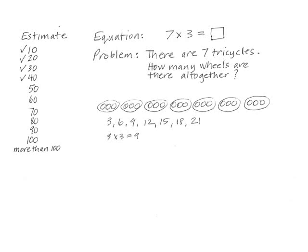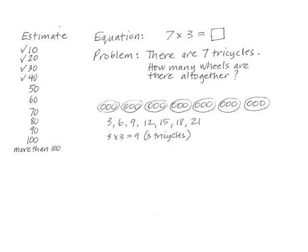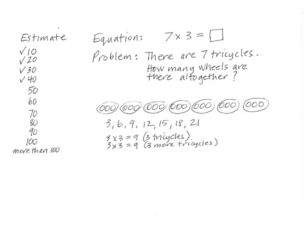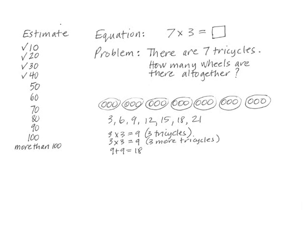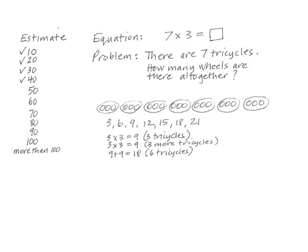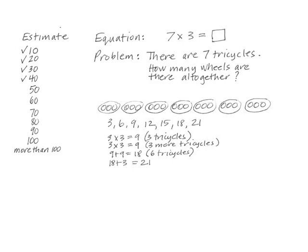Ruthie had a different way of figuring out the answer. She began: 'I know three times three is nine.' I recorded, not sure where Ruthie was going. Then she added, 'And that's three tricycles.' I recorded, and Ruthie continued: 'Three times three again is three more tricycles.' I recorded. She continued: 'Nine plus nine is eighteen — so that's six tricycles, but we need one more tricycle, so we have to add three more wheels.' I recorded eighteen plus three equals twenty-one, and said: 'So we figured out the answer of twenty-one another way.'